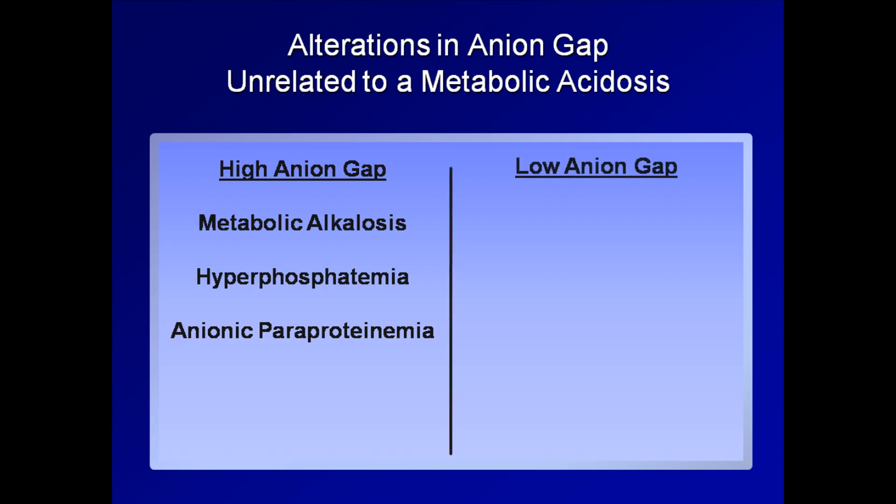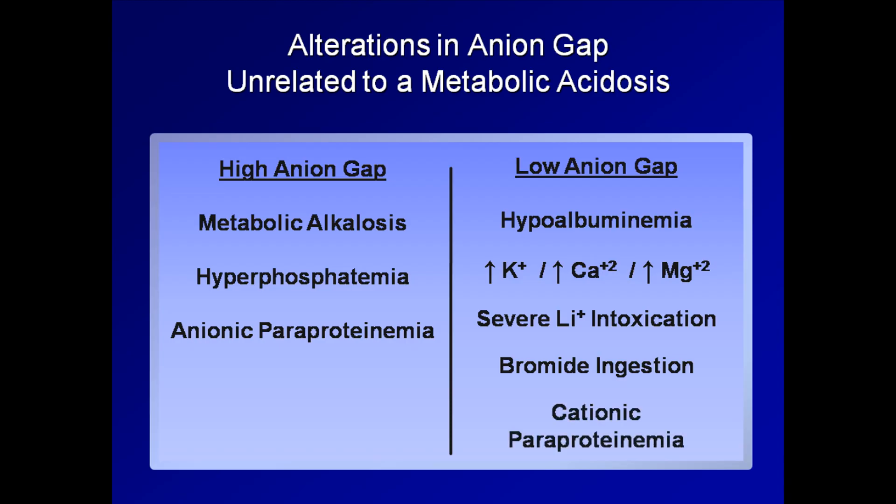A low anion gap is predominantly caused by low albumin, since albumin is one of the primary unmeasured anions. Other causes could theoretically include excessive concentrations of any cation, including potassium, calcium, magnesium, and even lithium. Bromism can lead to a falsely low anion gap, as some lab equipment registers bromide as chloride. This can be seen with therapeutic levels of pyridostigmine bromide sold under the brand name of Mestinon and used for myasthenia gravis. Finally, the presence of a cationic paraprotein, such as a monoclonal IgG in multiple myeloma, can also lead to a low anion gap. In fact, an unusually low anion gap, in the absence of an obvious electrolyte disturbance or hypoalbuminemia, may prompt an evaluation for multiple myeloma.